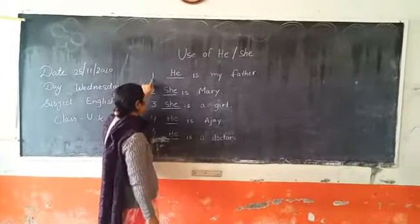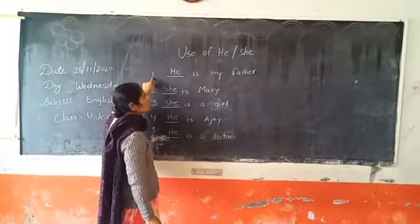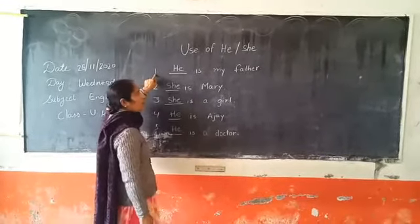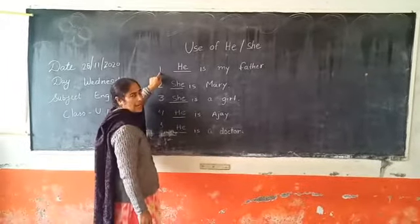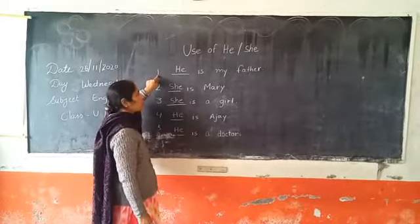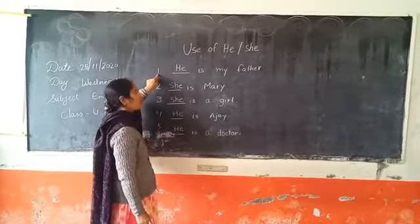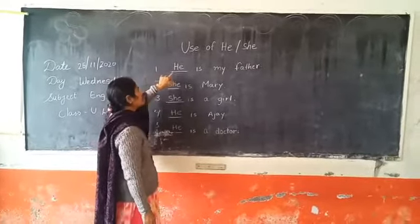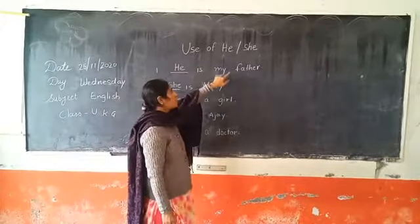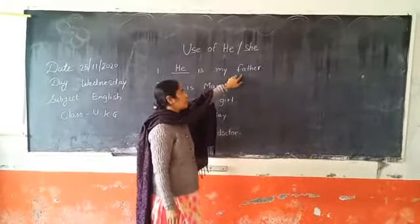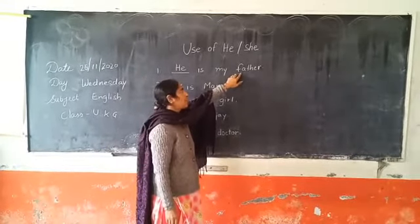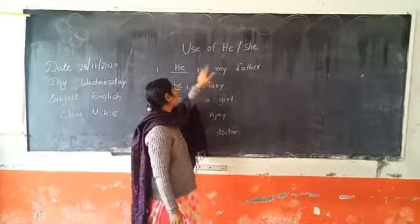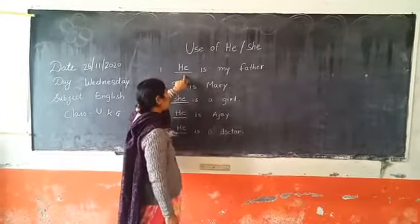Children, you know that we use 'he' for male and we use 'she' for female. In the first sentence, dash is my father. Father is male, so we use 'he' for male.